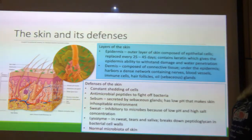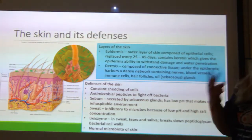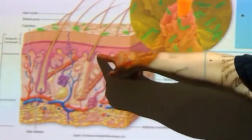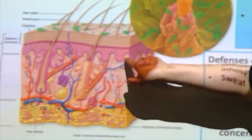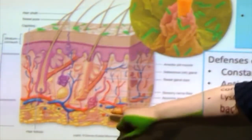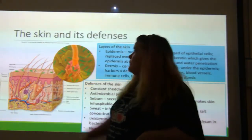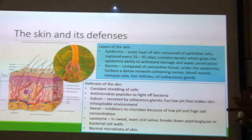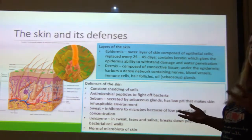The skin and its defenses. Layers of the skin. You have two layers to your skin. The top is the epidermis and the bottom is the dermis. The epidermis is the outer layer of skin. It's composed of epithelial cells — basically cells that cover a surface. That's epithelial.